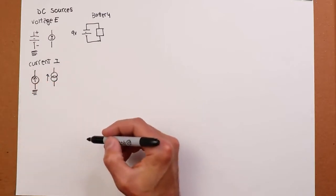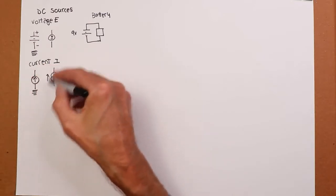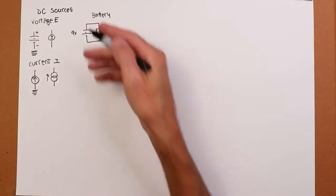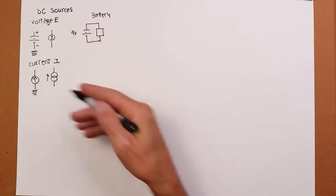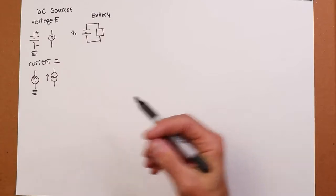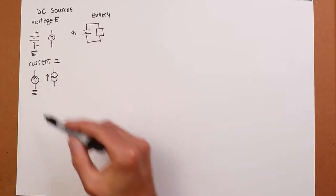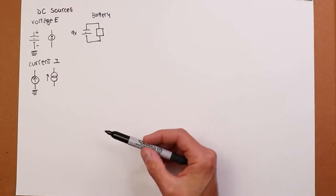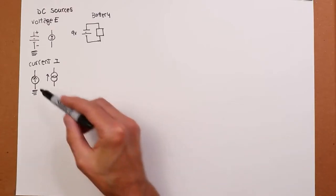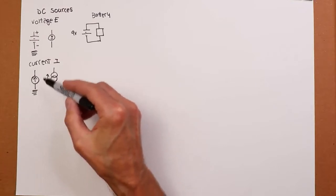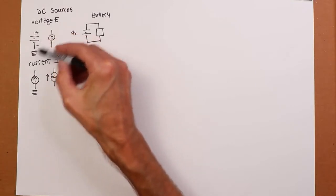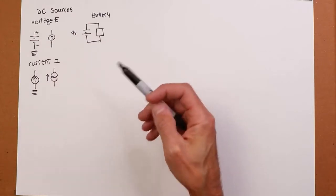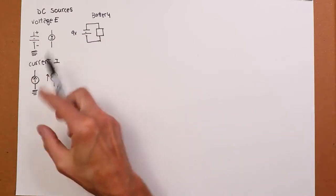Now, when it comes to current sources, we don't really have something like that that we can go to the store and buy. We buy constant voltage sources, batteries, but we don't really buy constant current sources. So mostly we use current sources as models for more complex devices like transistors. Or sometimes it's possible to convert a voltage source into an equivalent current source to ease analysis. It's just a little technique that we'll use.